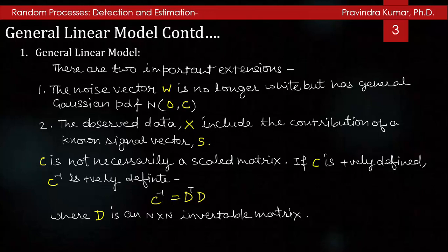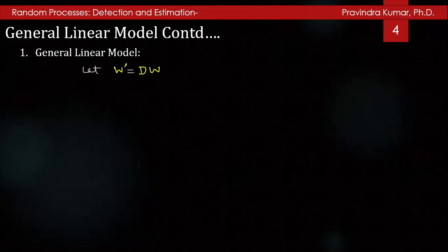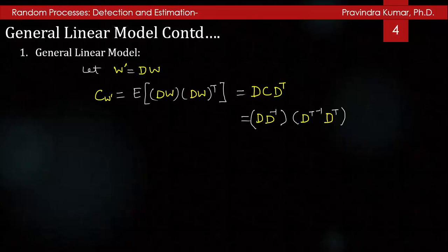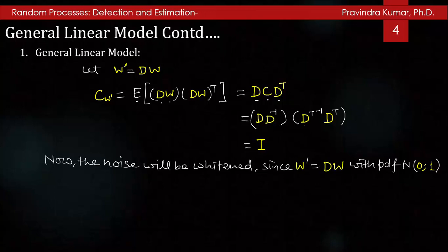The matrix D acts as a whitening transformation when applied to noise omega. If we define omega dash equal to D omega, then the covariance of omega dash is E[D omega (D omega) transpose] which equals D C D transpose. Writing this out as D times (D transpose D) inverse D transpose yields the identity matrix. So the noise is whitened: omega dash equals D omega follows a normal distribution with mean 0 and variance identity.